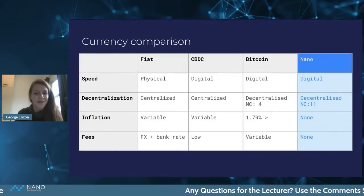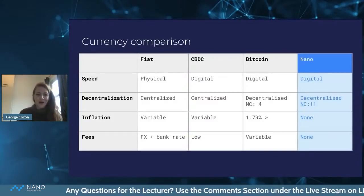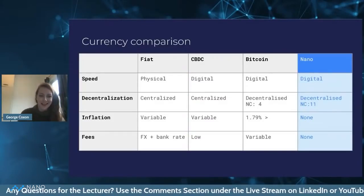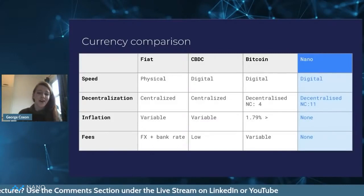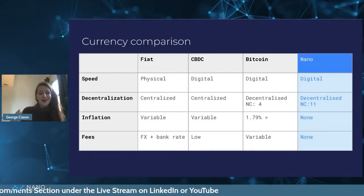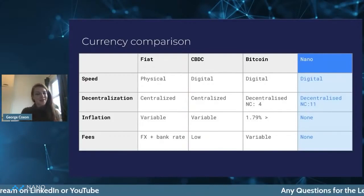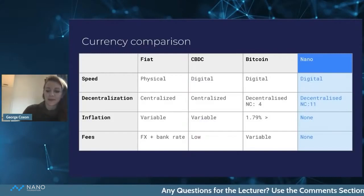With fiat, we have FX and bank rates, which can be variable depending on where you are and what you're trying to do. CBDCs obviously have low fees. However, low can be free, and the next step from that is no fees. Nano has no fees in its network.